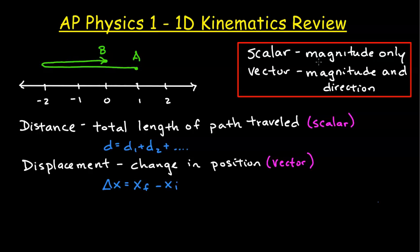First, we're going to distinguish between scalar and vector quantities. A scalar quantity is one that has magnitude only, while a vector quantity has magnitude and direction.